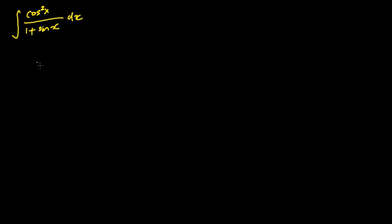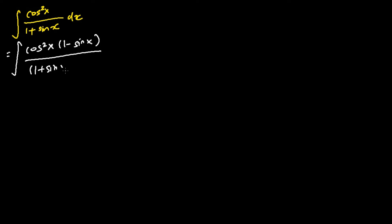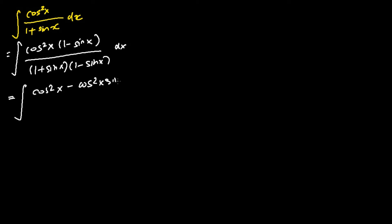For the very first step, what we are going to do is we are going to multiply the numerator and the denominator by 1 minus sine x. In the numerator, we have cosine square x times 1 minus sine x, and the denominator will be (1 plus sine x)(1 minus sine x). Then we expand the numerator and the denominator. We get the integral of cosine square x minus cosine square x sine x, and the denominator will just be 1 minus sine square x.